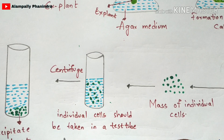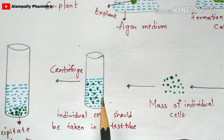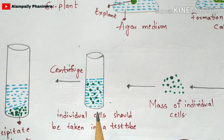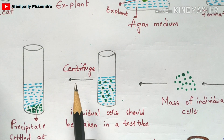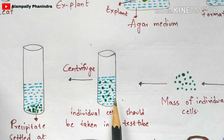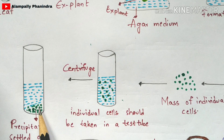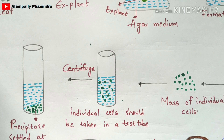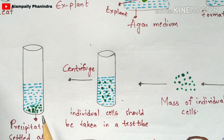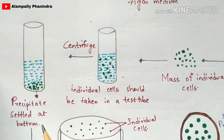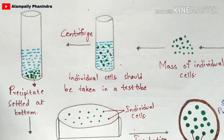This mass of individual cells along with the medium will be transferred into another fresh test tube. Then this material will get centrifuged. Centrifugation forms two separate layers: the separated mass of cells settles as a precipitate at the bottom, while the remaining nutrient medium stays in the upper column. The precipitate gets settled at the bottom.